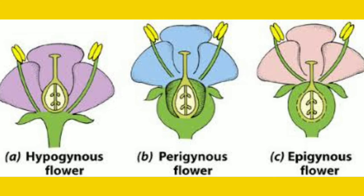In a hypogynous flower, the ovary occupies the topmost position on the thalamus, so the ovary is superior to the other floral parts. As seen in the diagram, the calyx and corolla arise from the lower portion of the ovary, which is why the ovary takes the topmost position. The word hypogynous means the other floral parts — calyx, corolla, and androecium — come out from the lower part of the gynoecium.